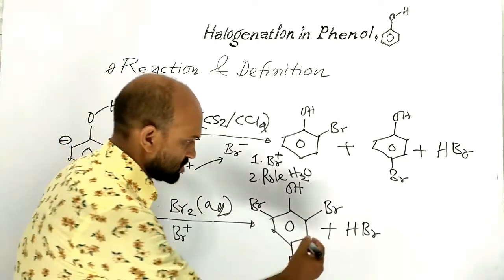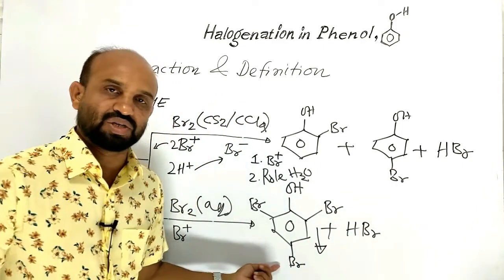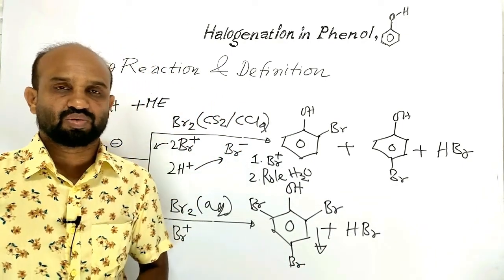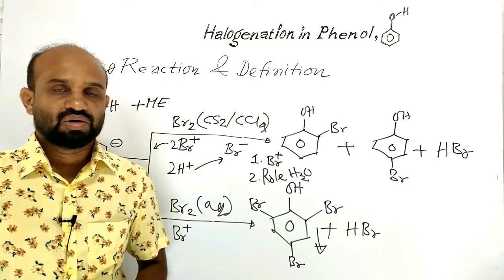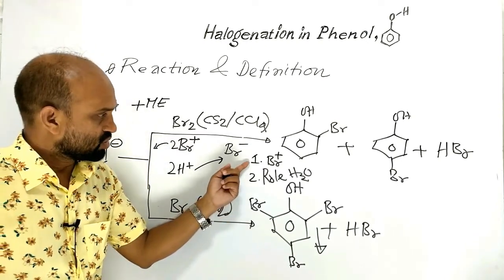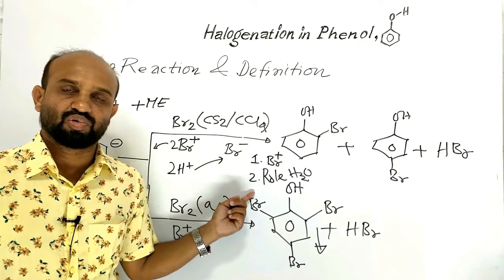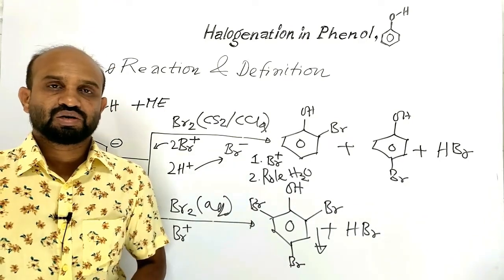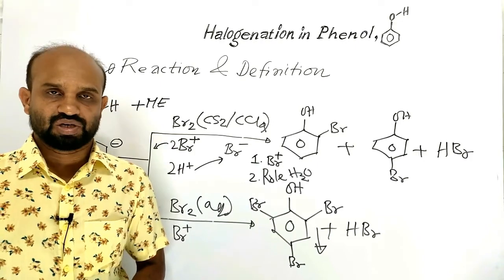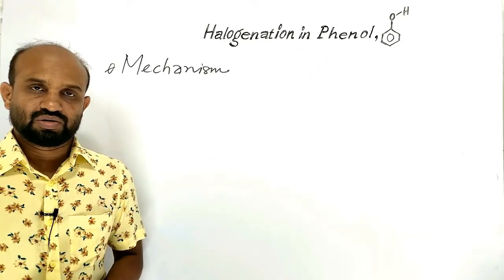2,4,6-tribromophenol is a yellowish-white precipitate. Now let's understand the formation of bromine cation and the role of water by looking at the mechanism of bromination.